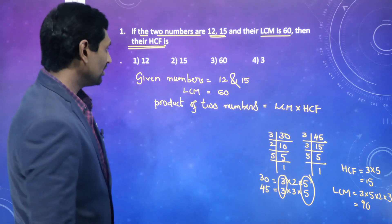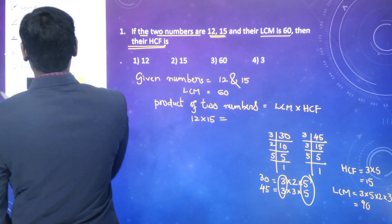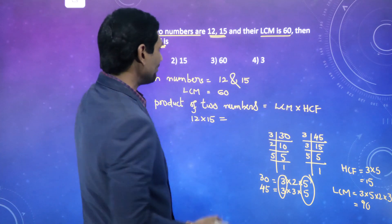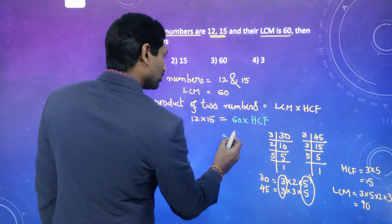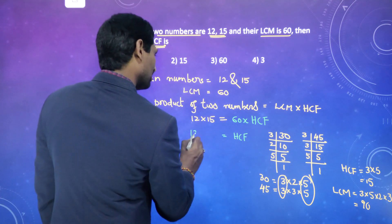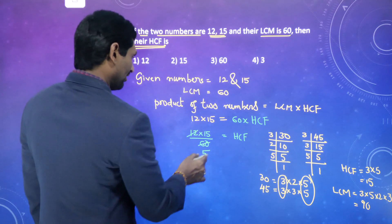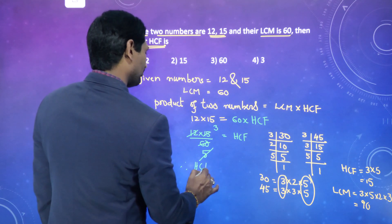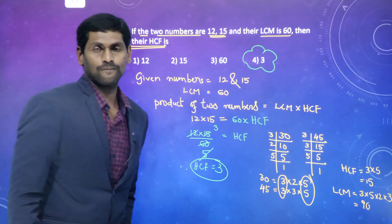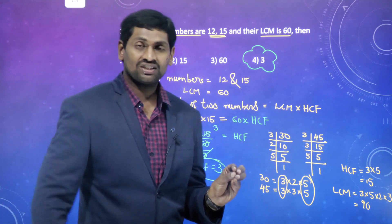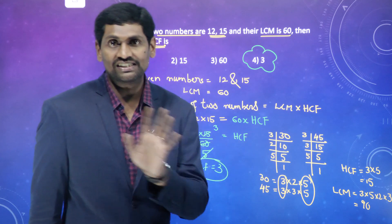Product of 2 numbers = LCM × HCF. So 12 × 15 = 60 × HCF. Transposing 60 to divide: HCF = 12 × 15 ÷ 60 = 3. HCF equals 3. For any 2 numbers, product of 2 numbers equals product of their LCM and HCF.